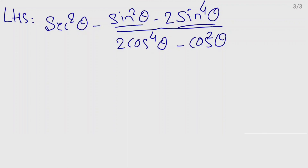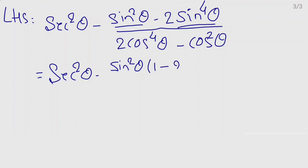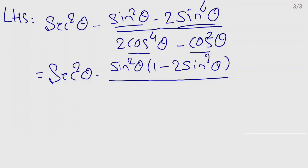Observe here: we have sin²θ and sin⁴θ, so sin²θ is common in those two terms — take it outside. This equals sec²θ as it is, minus sin²θ times (1 minus 2sin²θ). In the denominator, cos⁴θ and cos²θ share cos²θ as common — take it outside: cos²θ times (2cos²θ minus 1).